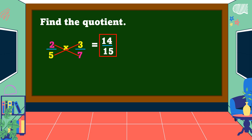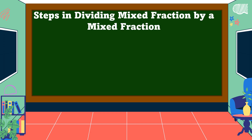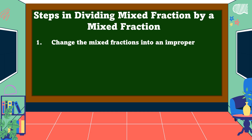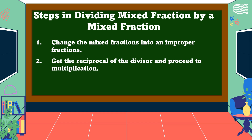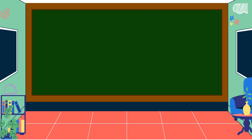These are the steps in dividing a mixed fraction by another mixed fraction. Number 1: Change the mixed fractions into improper fractions. Number 2: Get the reciprocal of the divisor and proceed to multiplication. Number 3: Simplify your answer to its lowest term whenever possible. To fully understand the steps, let's study some examples.